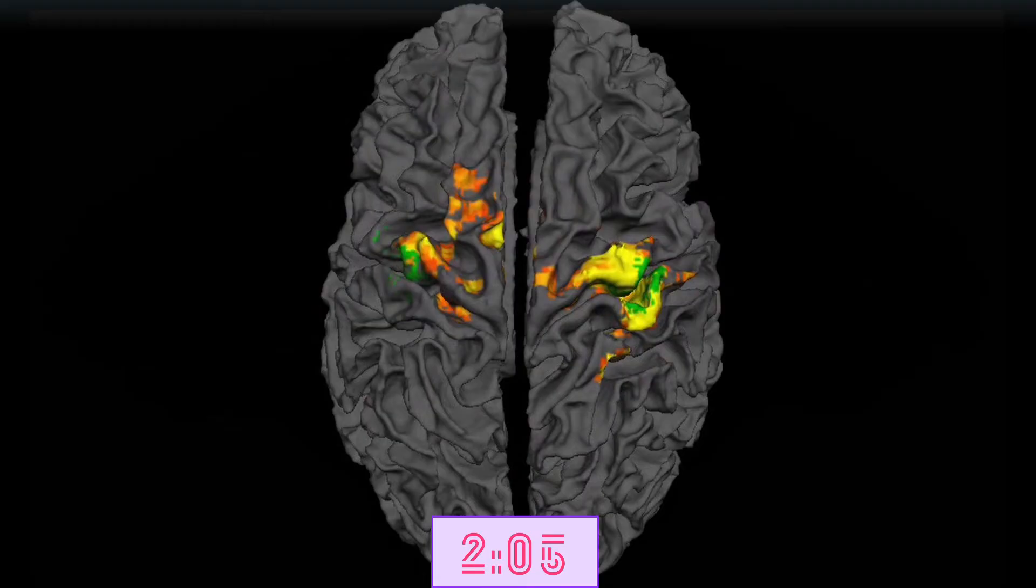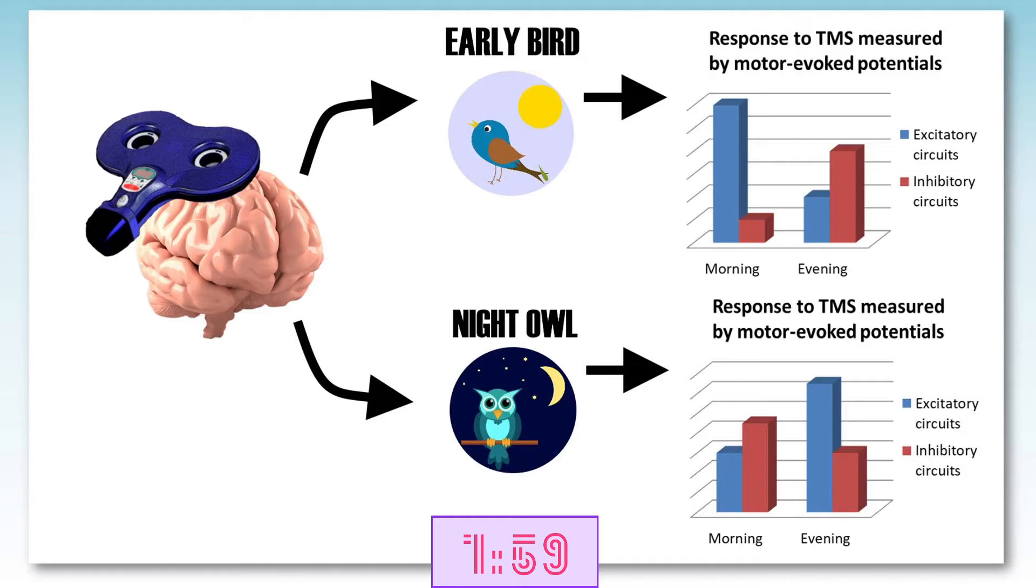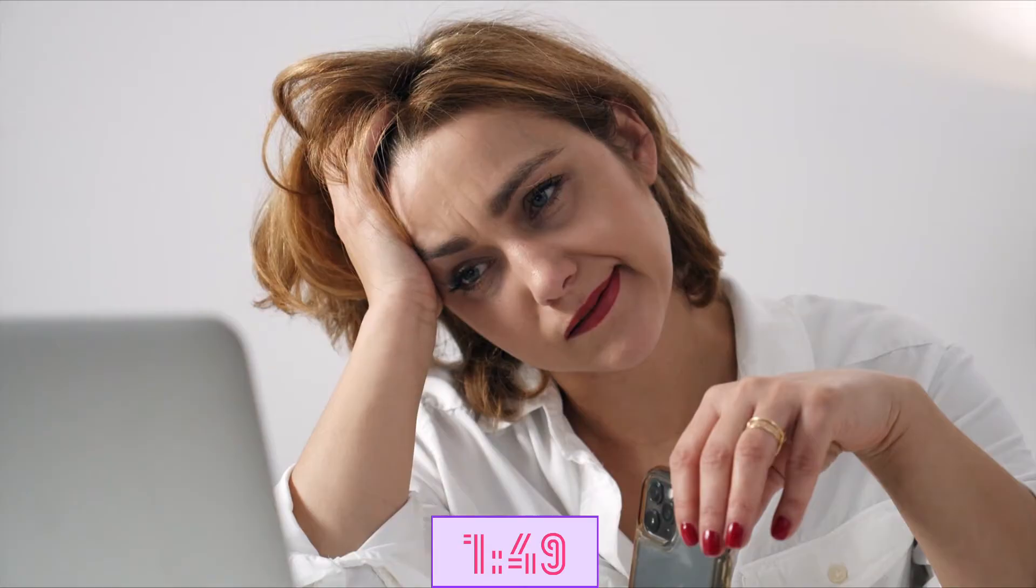Furthermore, they showed that excitatory circuits, which promote brain activity, are more dominant at the preferred time, whereas inhibitory circuits, which slow down the brain, are more dominant at the non-preferred time. So a brain of a morning person is slowed down in the evening and the brain of an evening person is slowed down in the morning.